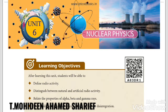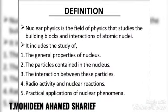At present, a large number of elementary particles like photons, mesons, positrons, and neutrons have been discovered. In 1911, the British scientist Ernest Rutherford explained that the mass of an atom is concentrated in its central part called the nucleus.